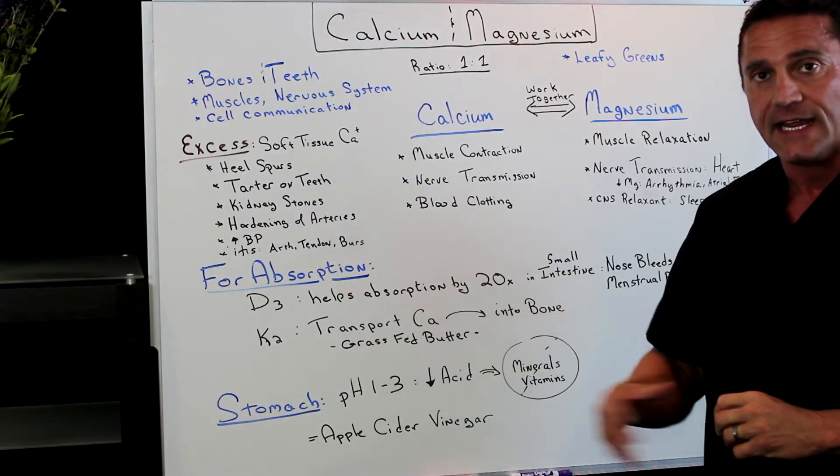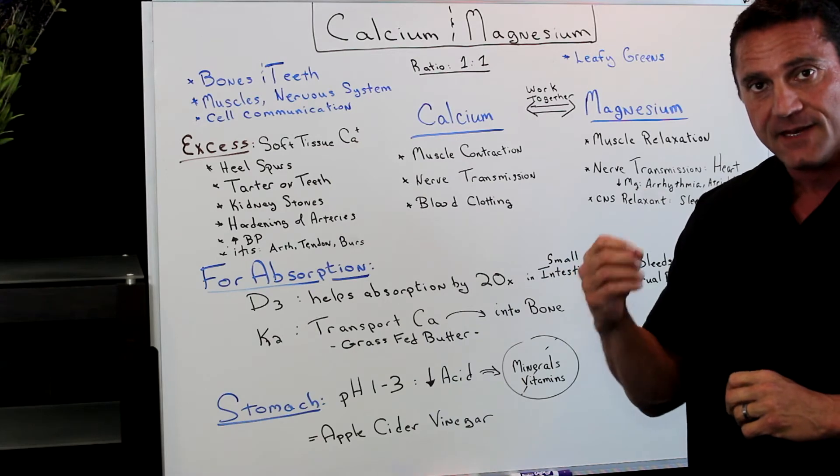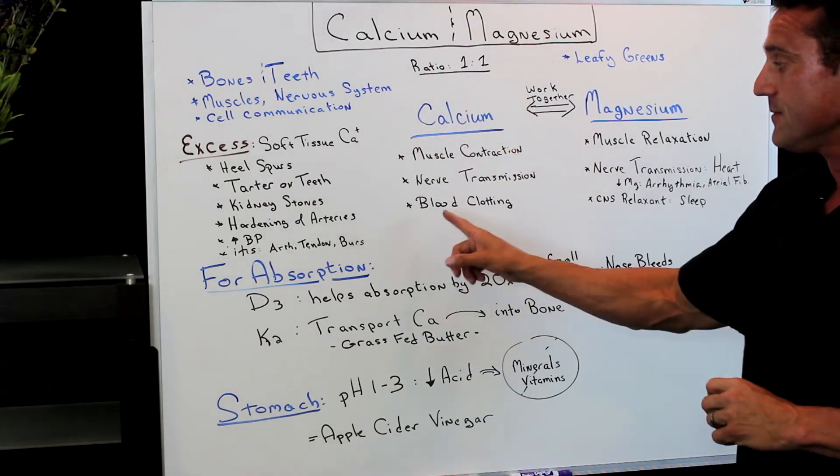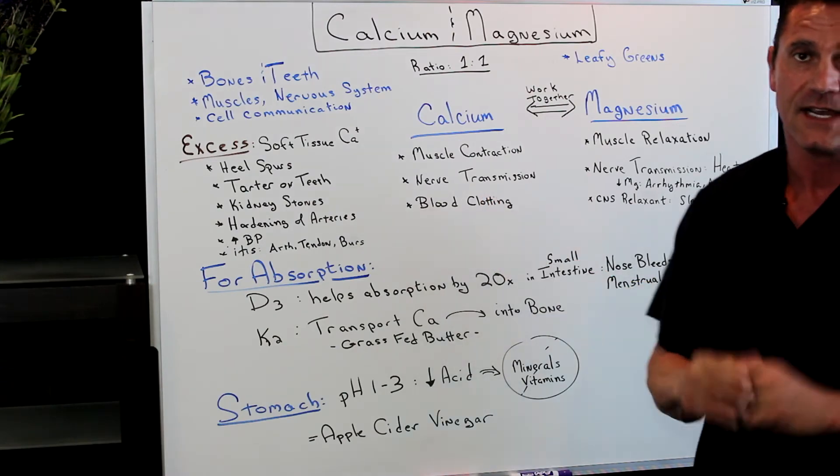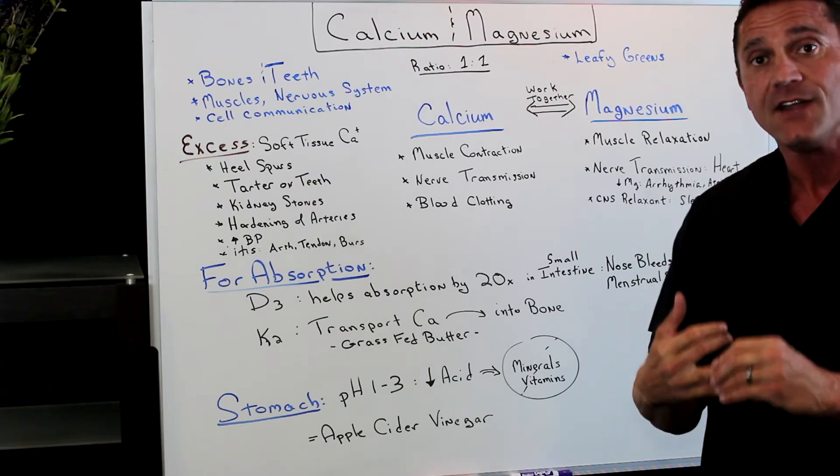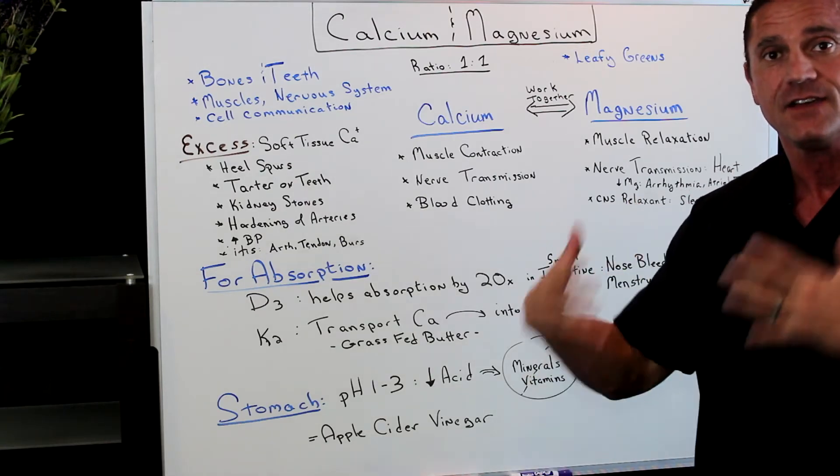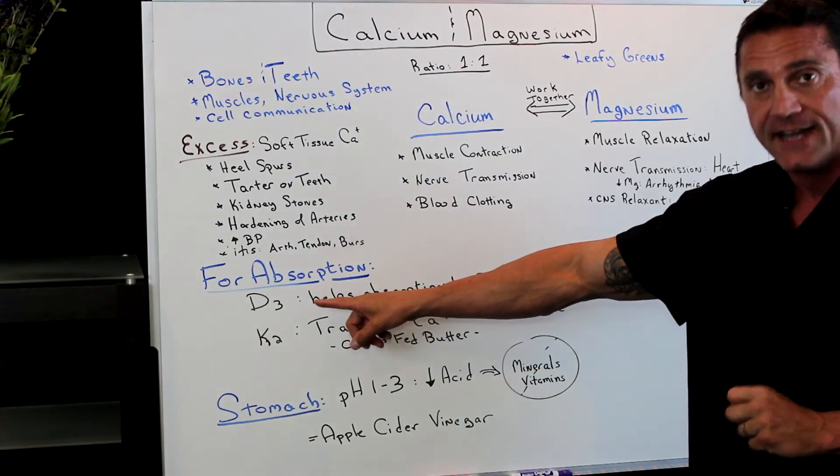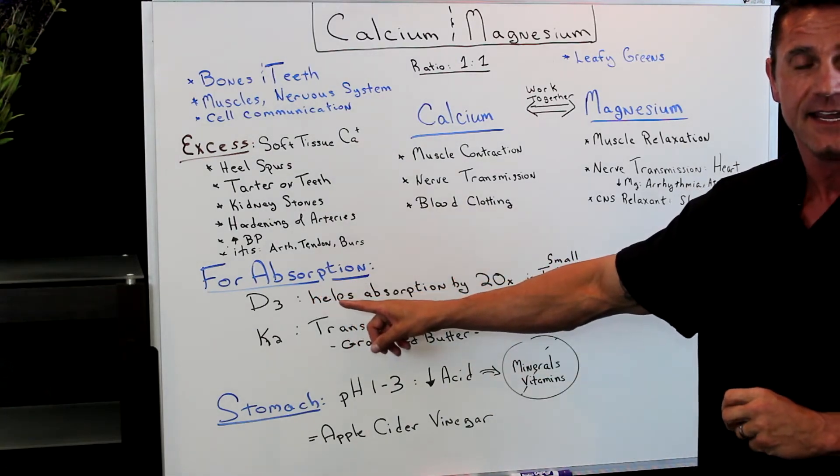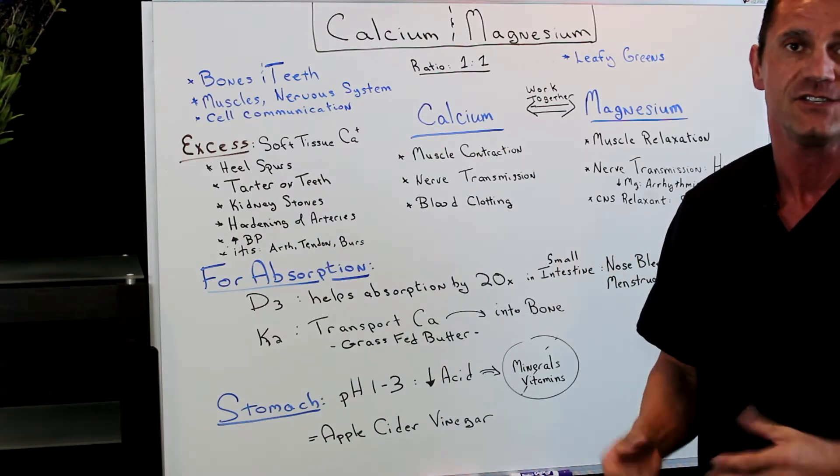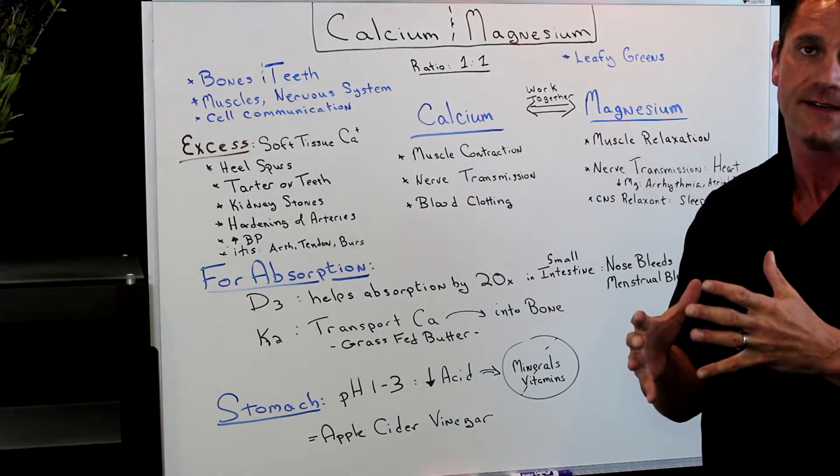Now, again, vitamin D3, if you're not taking enough vitamin D3, this is, again, calcium is involved with blood clotting. Oftentimes, when I talk to people who have frequent nosebleeds or females who have excessive menstruation flow, all I do is add vitamin D3 into the diet and the blood clot stops. The excess of bleeding from menstruation is more controlled.